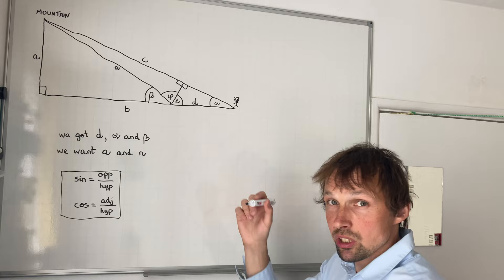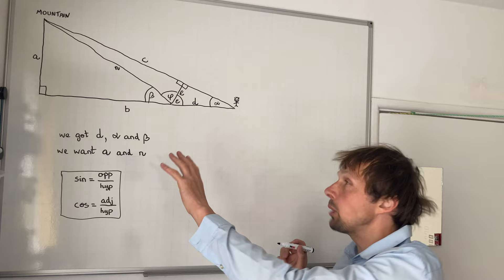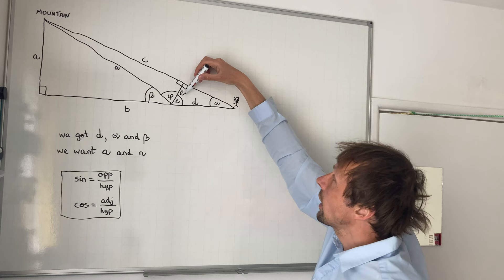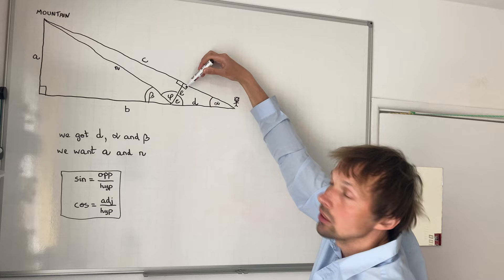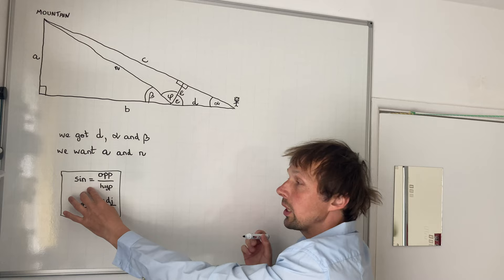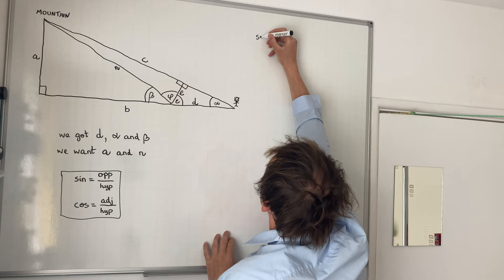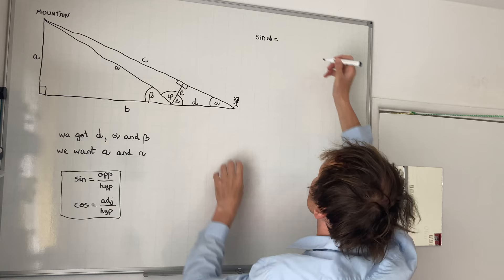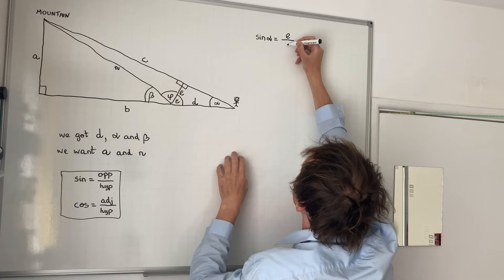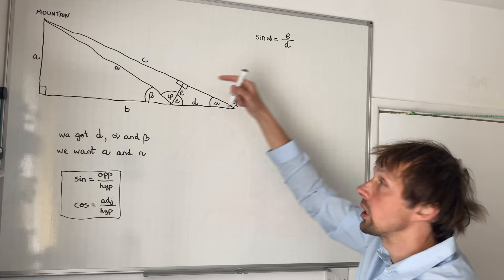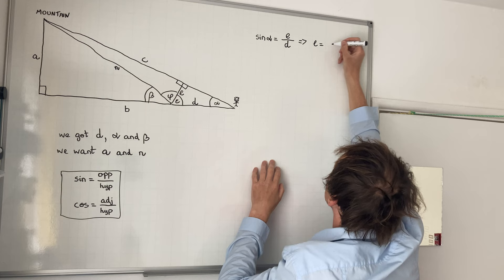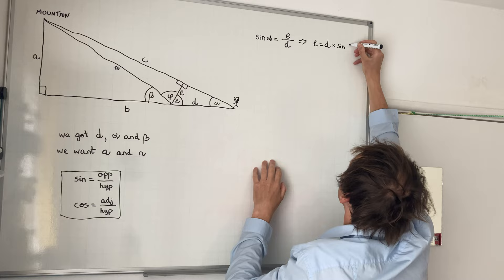We start by calculating e — we won't need e in the final answer, but we need it to proceed. We know the angle and the hypotenuse d of this small triangle, so: sine of alpha equals e divided by d. From this we get e equals d times sine of alpha. We already know e using the values we have.